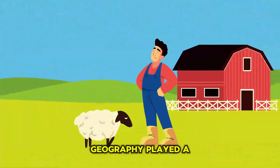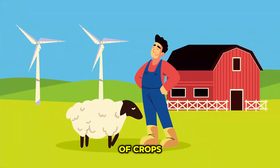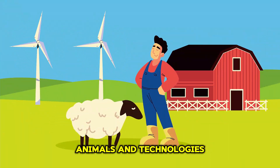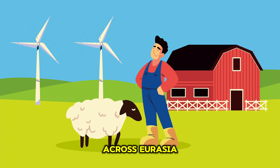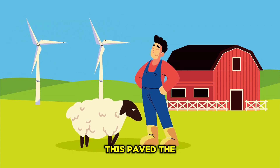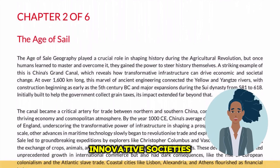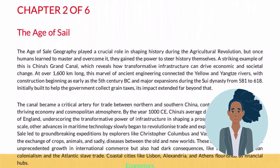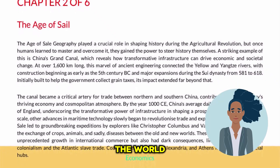Geography played a key role, allowing the spread of crops, animals, and technologies across Eurasia. This paved the way for complex, innovative societies that brought both benefits and challenges to the world.